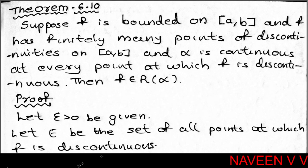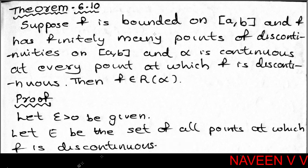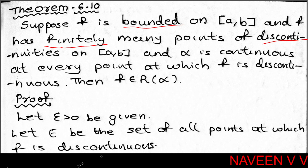Theorem 6.10: Suppose f is bounded on closed interval [a, b], f has finitely many points of discontinuities on [a, b], and alpha is continuous at every point at which f is discontinuous. Then f belongs to R(alpha), that is, f is Riemann-Stieltjes integrable with respect to alpha.